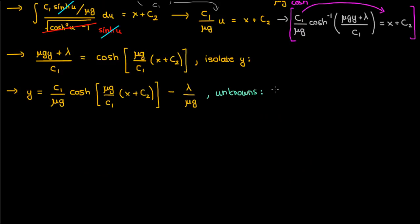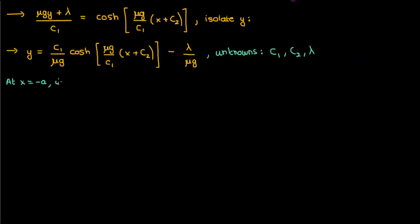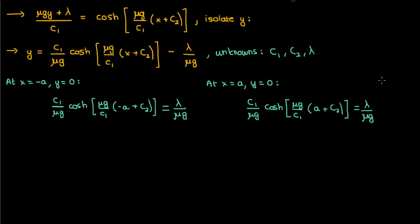There are three unknown constants in this expression: c1, c2, and lambda. Because we have three unknowns, we need three equations. Two of those equations come from the boundary conditions: y must be 0 at x equals negative a and x equals a. At x equals negative a, y equals 0 gives us the first boundary condition equation. At x equals positive a, y also equals 0 gives us the second boundary condition equation. We rewrite both by moving the lambda term to the other side.